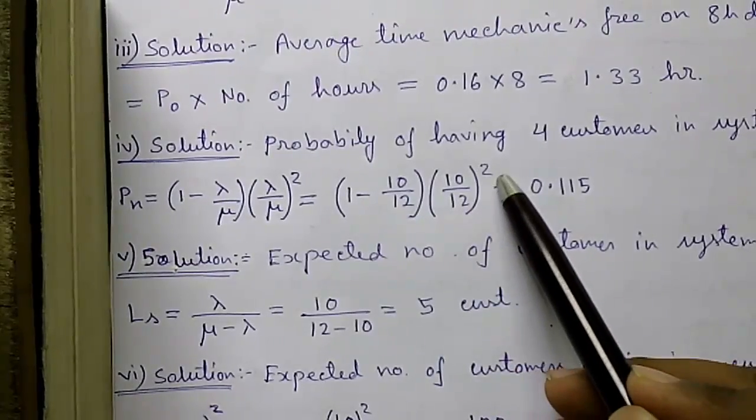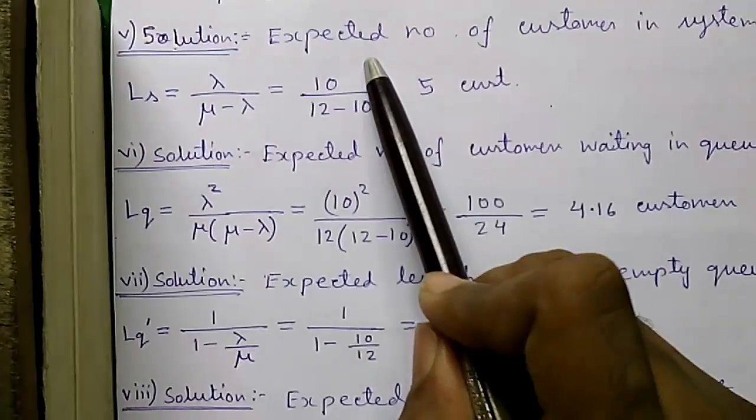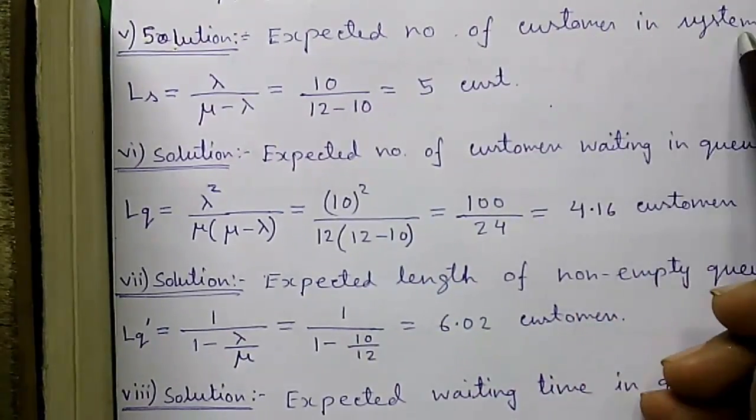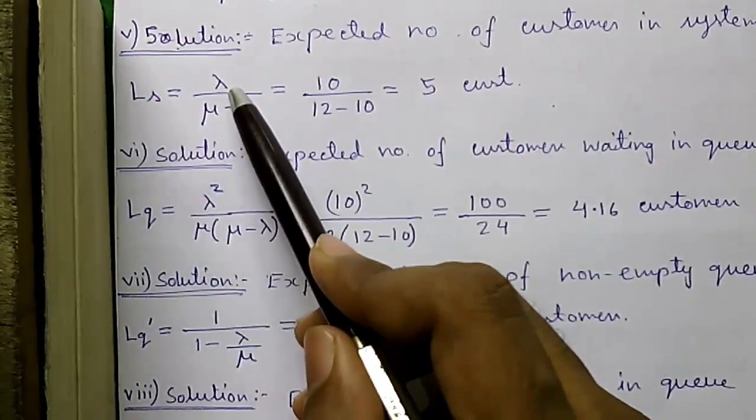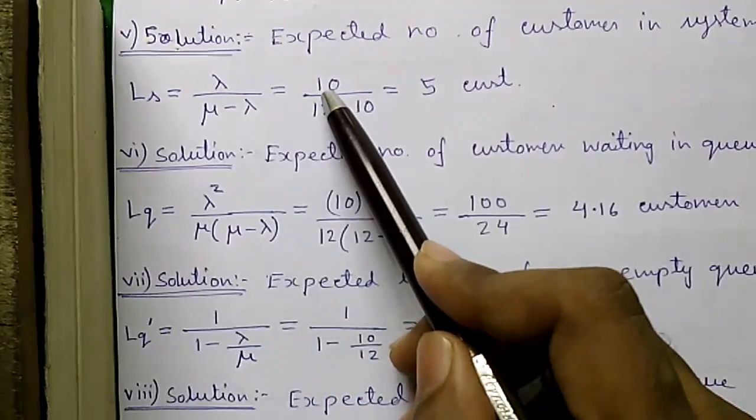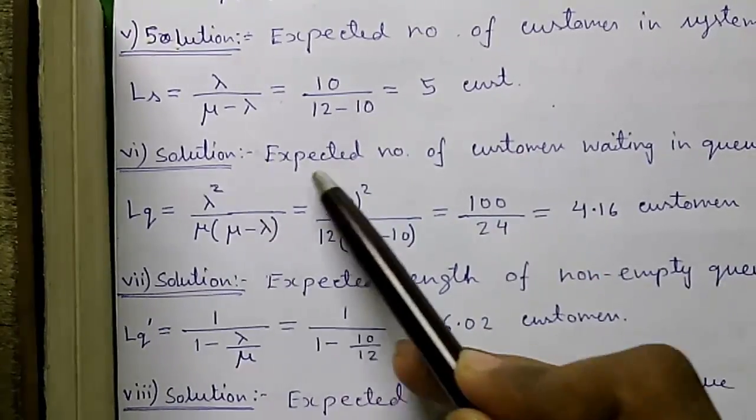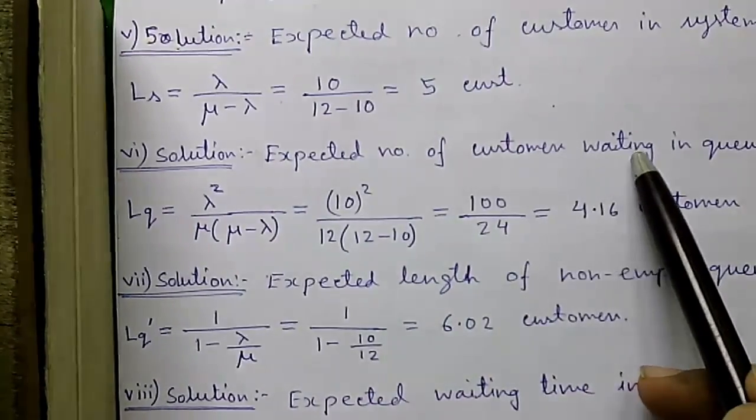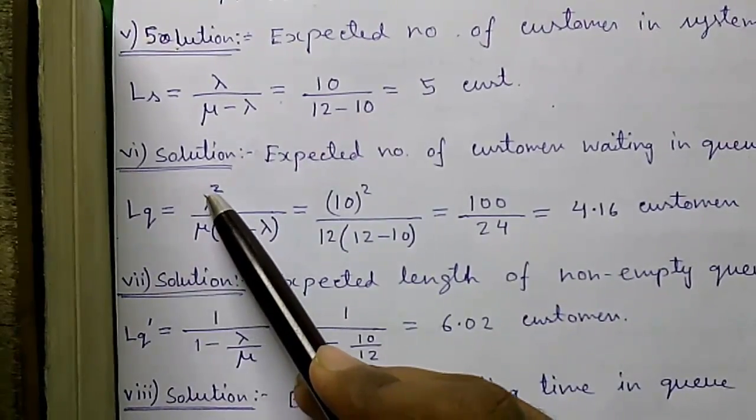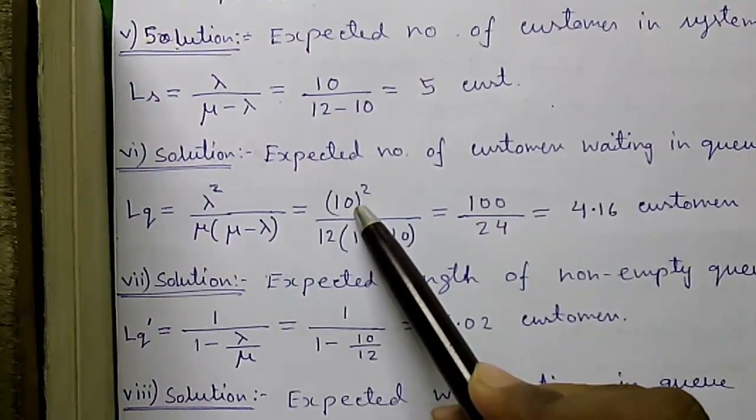Solution of question five: expected number of customers in system is given by Ls equals lambda divided by (mu minus lambda) equals 10 divided by (12 minus 10) equals 5 customers. Solution of six: expected number of customers waiting in the queue is given by Lq equals lambda squared divided by mu times (mu minus lambda) which equals 10 squared divided by 12 times (12 minus 10) which equals 4.16 customers.